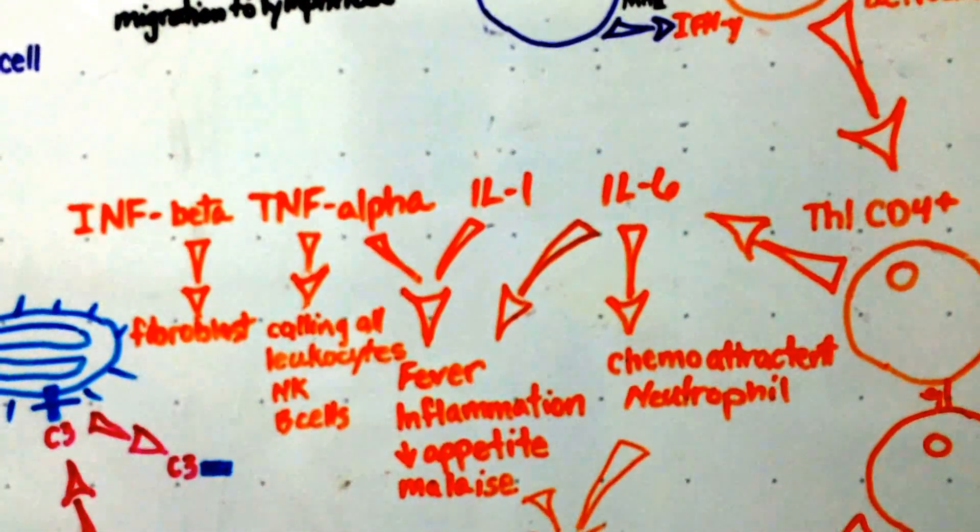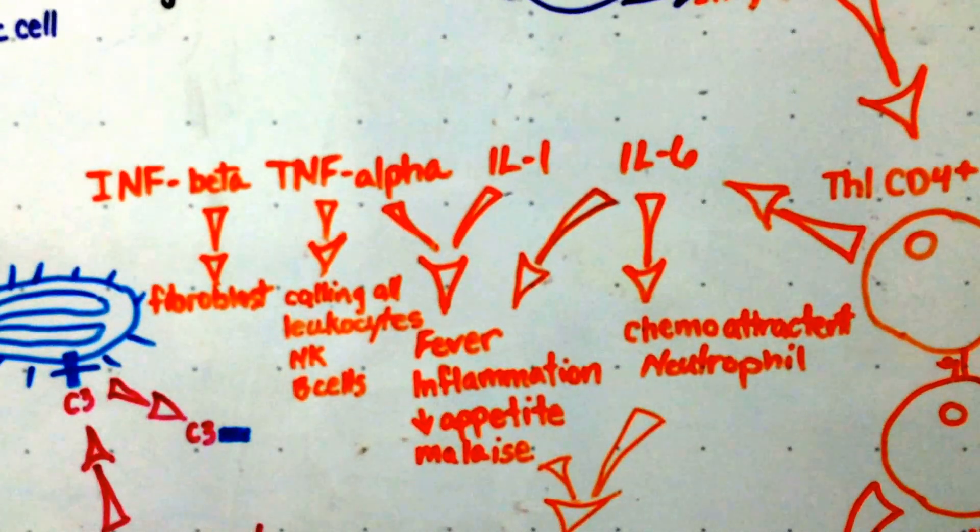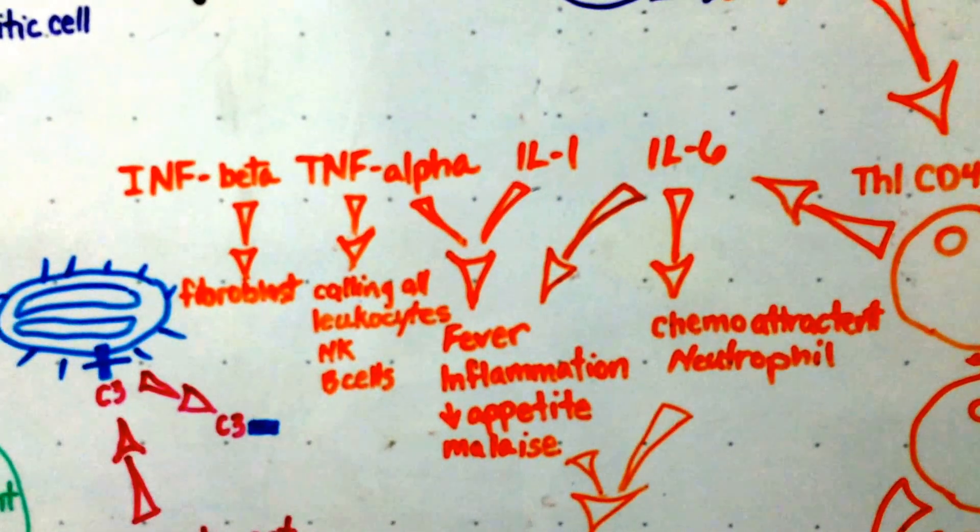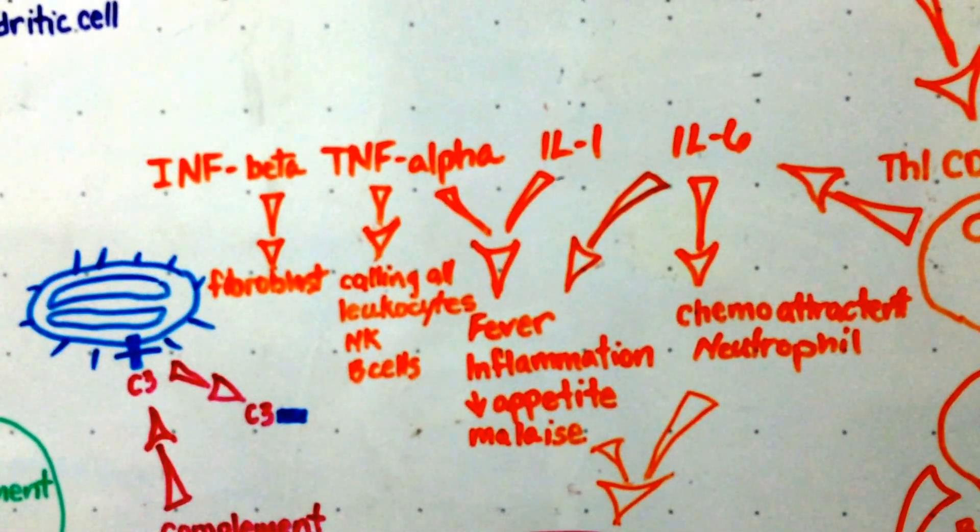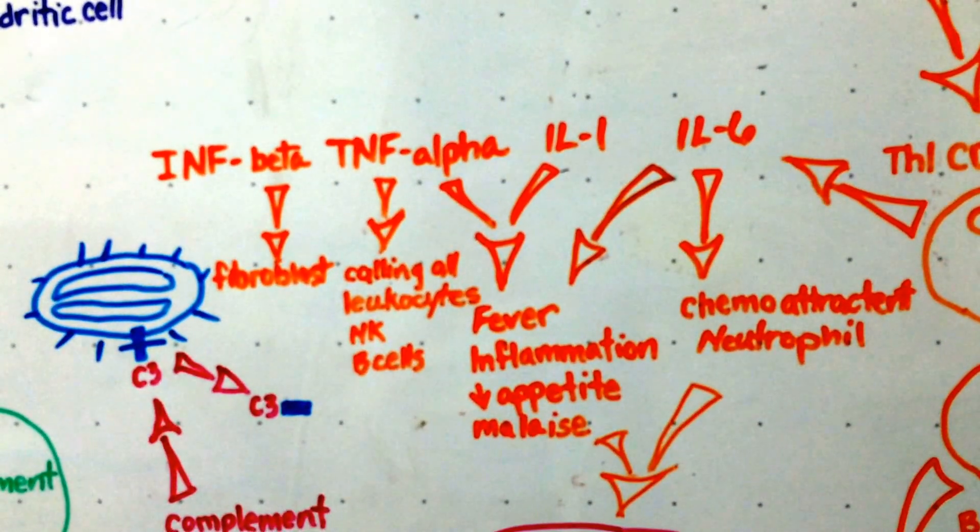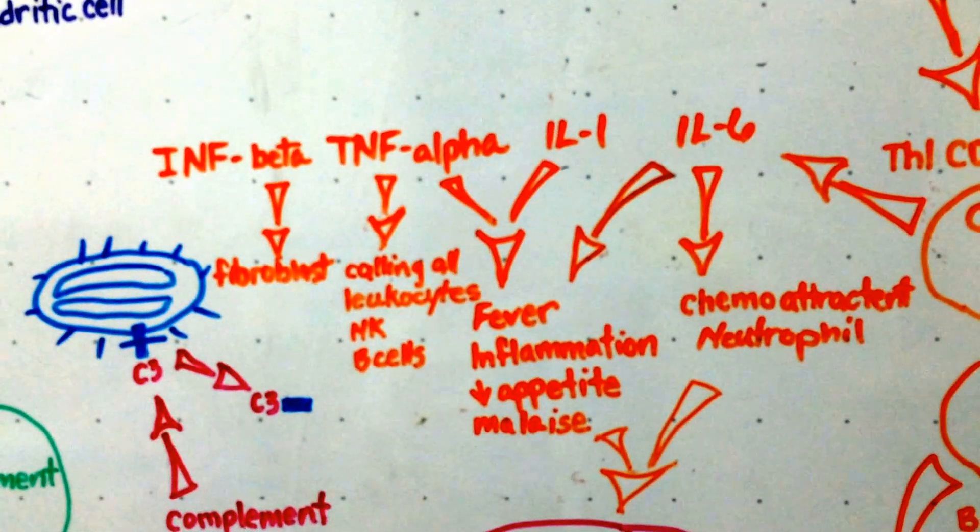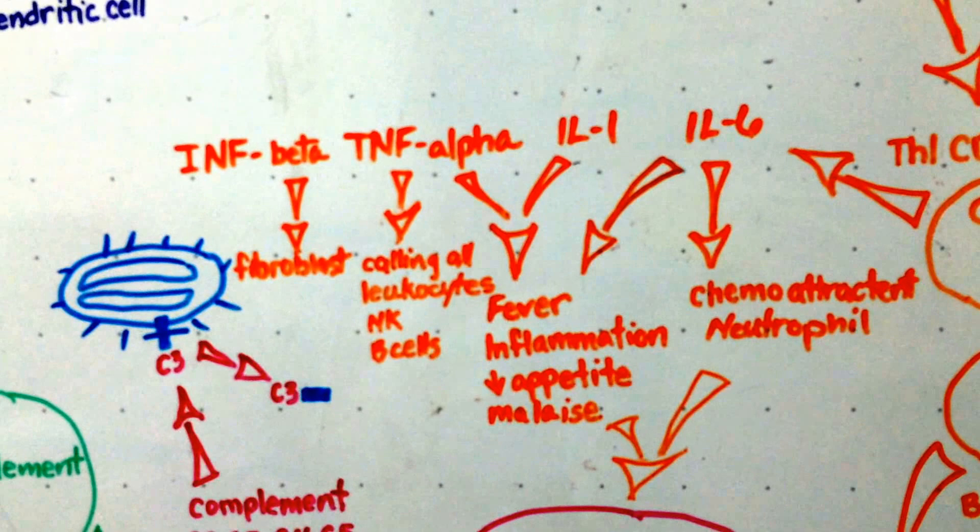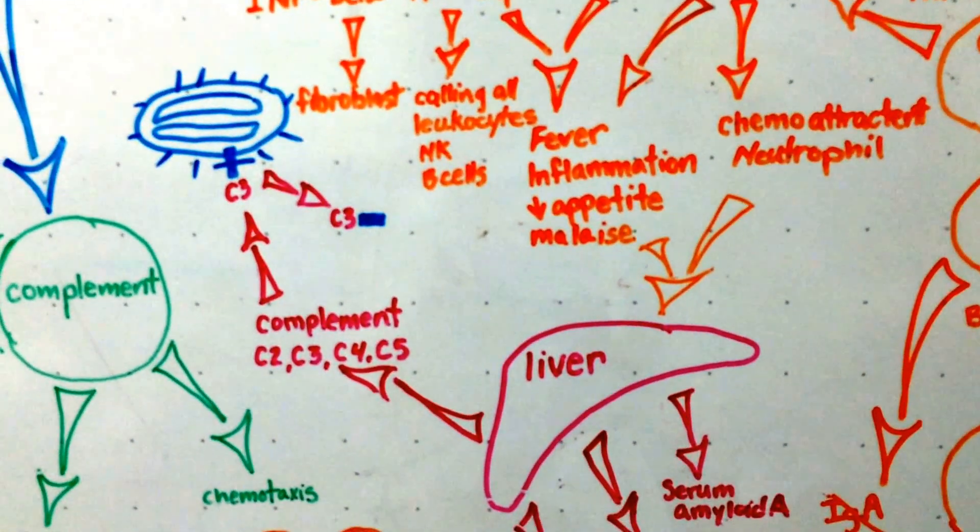This Th1 cell releases lots of cytokines. The Th1 is known for releasing inflammatory cytokines. So interleukin-6 of course brings in more neutrophils which releases more cytokines and causes more inflammation and more leaky vessels. And that interleukin-6, interleukin-1 and TNF-alpha, they act on the liver.